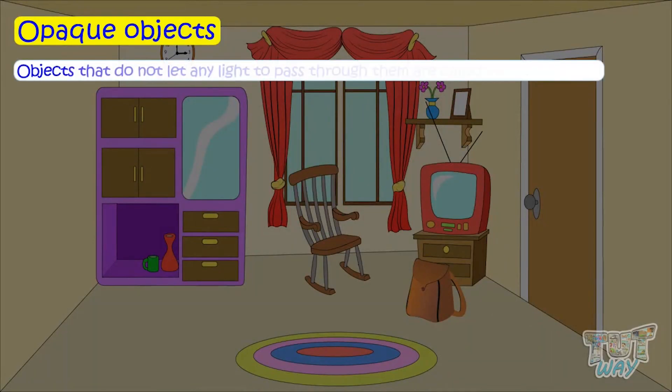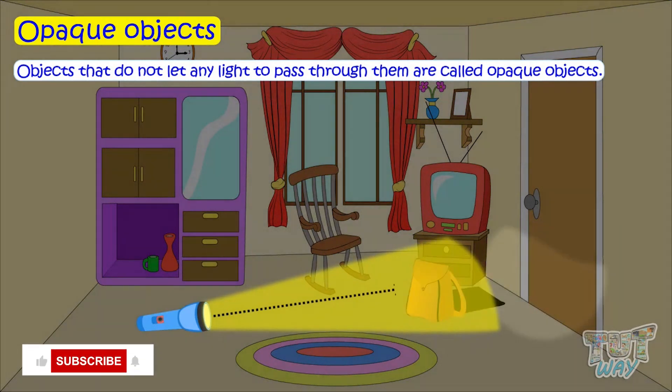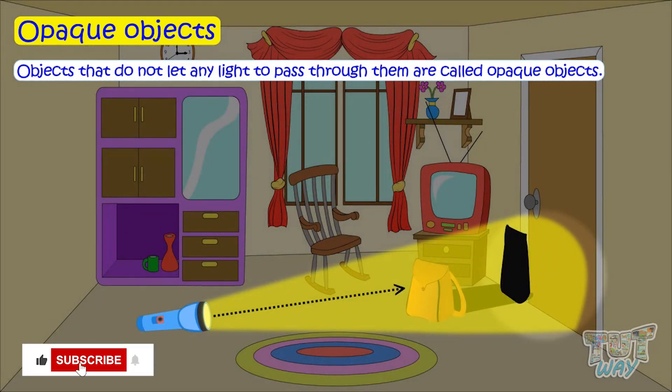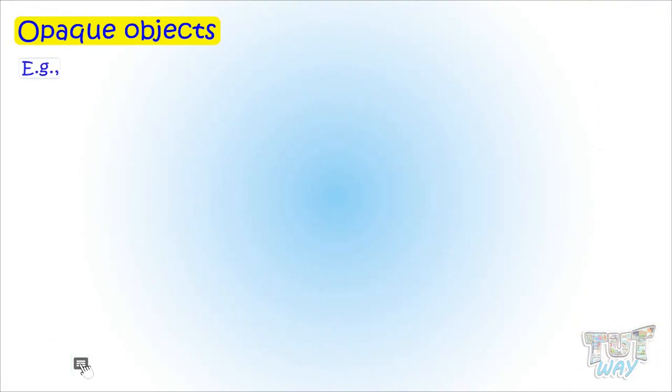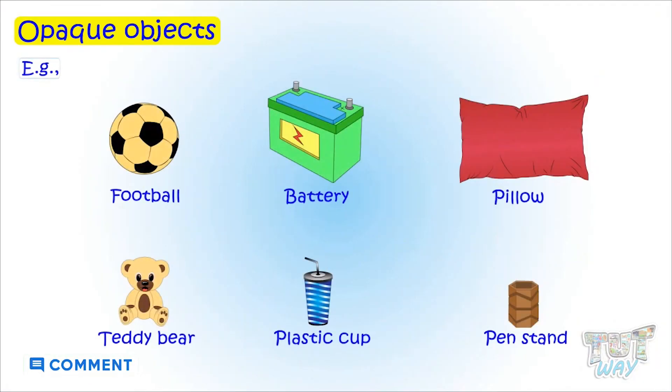Opaque objects. Objects that do not let any light pass through them are called opaque objects. Some of the light is reflected back and some is absorbed. Here are some examples of opaque objects.